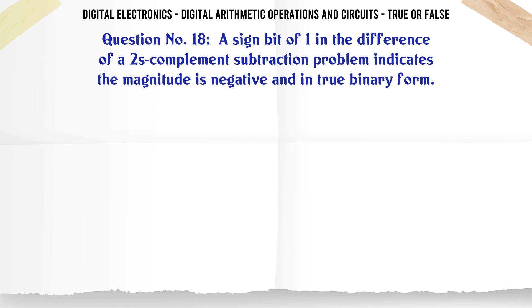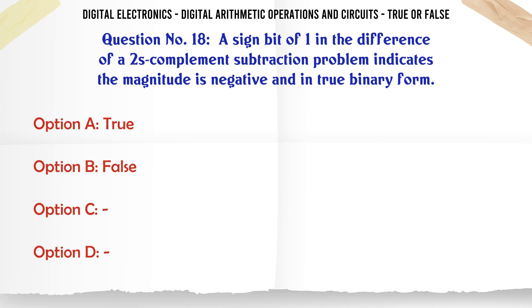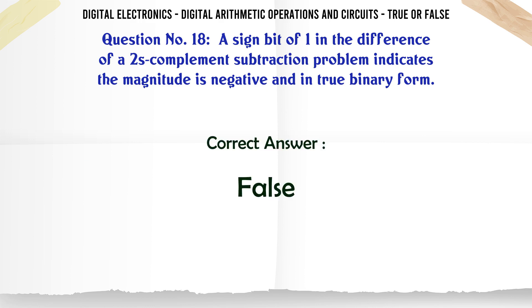A sign bit of 1 in the difference of a 2's complement subtraction problem indicates the magnitude is negative and in true binary form. True or False? The correct answer is False.